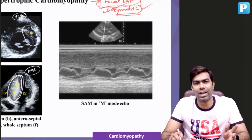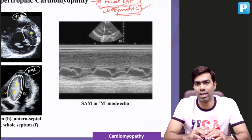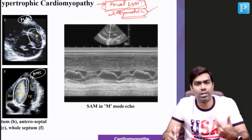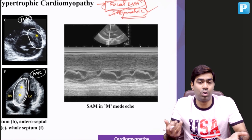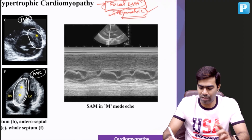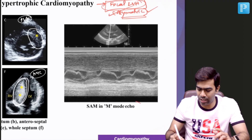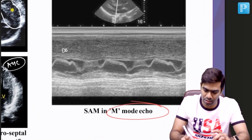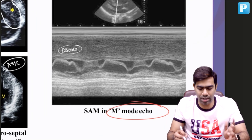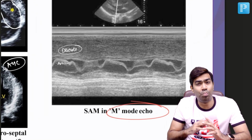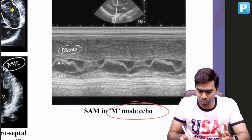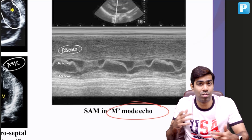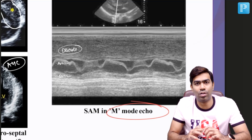You can also demonstrate the systolic anterior motion of the mitral valve apparatus, especially the anterior mitral leaflet (AML), by many means. One interesting method is M-mode echo. In M-mode echo, during diastole, there will be movement of the anterior mitral leaflet. Remember, the AML is the one that moves more compared to the posterior mitral leaflet (PML). PML movement will be very subtle or negligible in diastole, whereas the AML moves significantly during normal diastole.